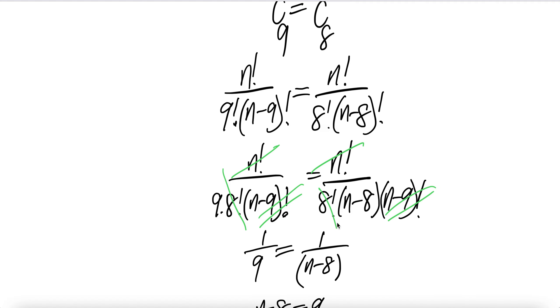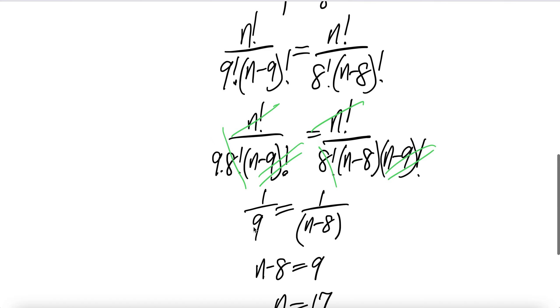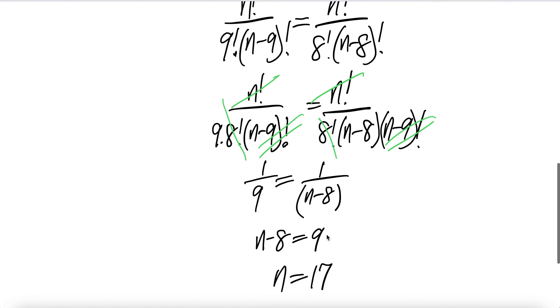8 factorial cancel, n minus 9 factorial, n minus 9 factorial cancel. On the left, you have 1 over 9. On the right, you get 1 over n minus 8.